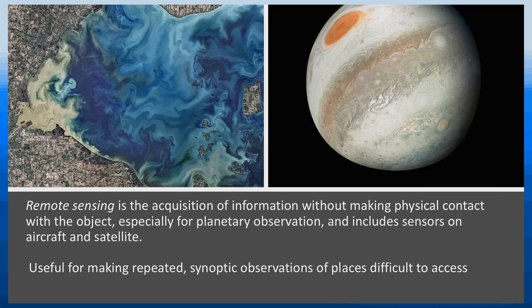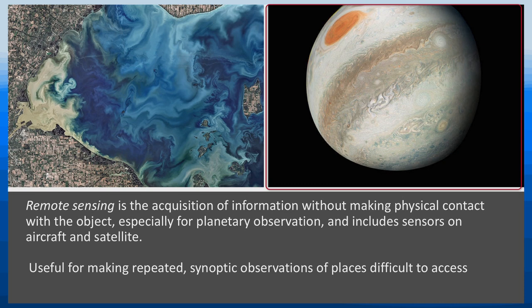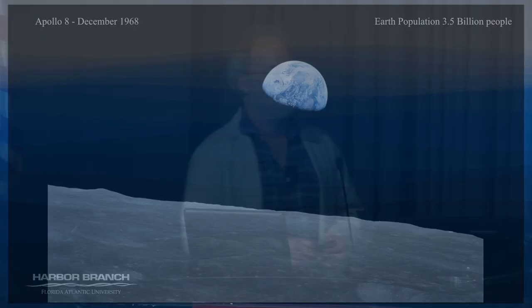What is remote sensing? It's the acquisition of information without making contact with it. When we talk about remote sensing, we're really talking about observing a planet like Earth. The advantage of remote sensing is that you can make these large-scale synoptic views of hard-to-reach places repeatedly, so you get a lot of information that you really can't get in any other way.